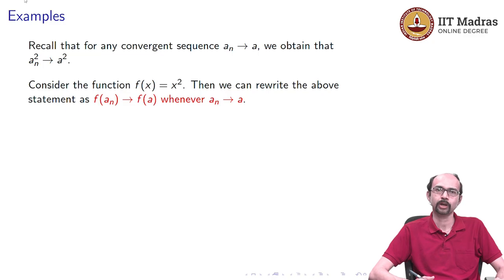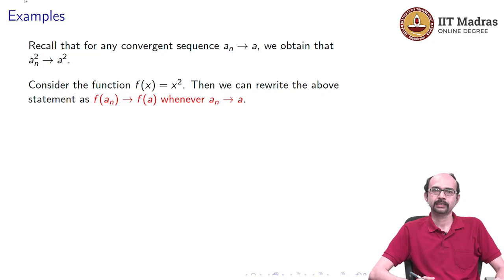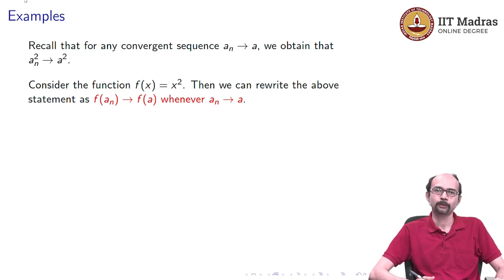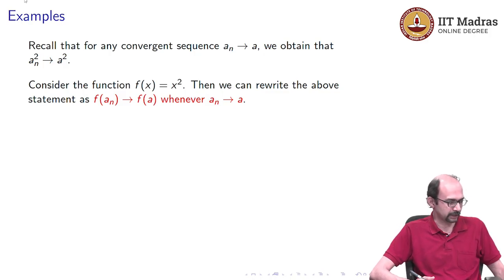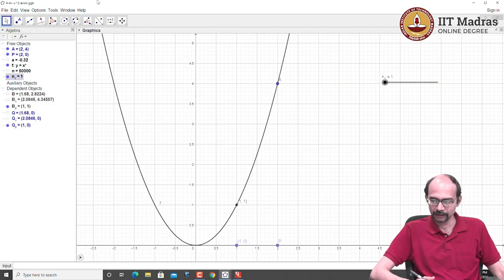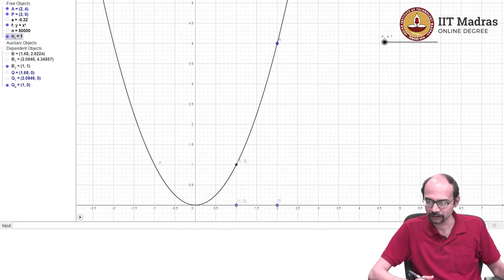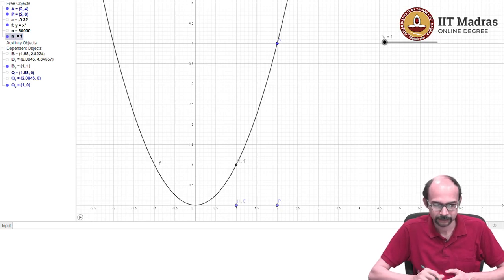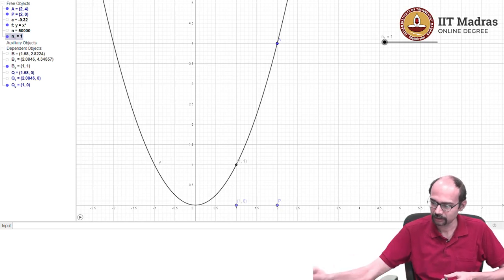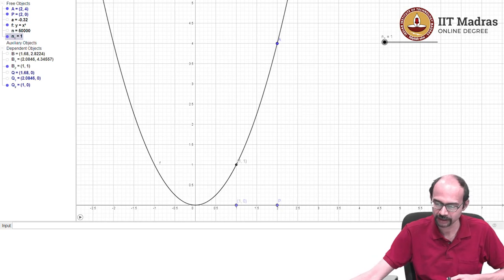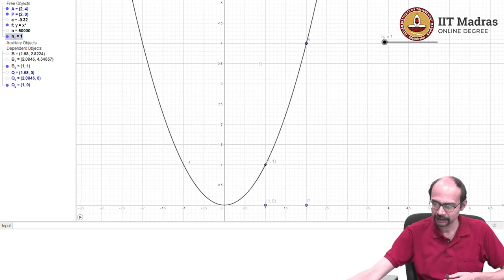This video is going to talk about different kinds of functions and how to think about limits as you have a sequence of points approaching a particular point — how does the corresponding sequence of function values behave? Before we go ahead, let us qualify this statement by looking at the graph of the function f(x) = x².